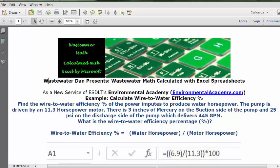Today's problem reads: Find the wire-to-water efficiency percentage of the power inputs to produce water horsepower. The pump is driven by an 11.3 horsepower motor. There is 3 inches of mercury on the suction side of the pump and 25 psi on the discharge side of the pump which delivers 445 GPM.